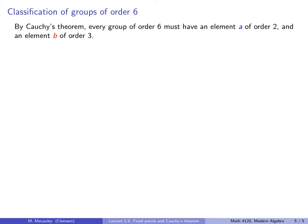Let's finish with an application of what we just learned. Let's classify all the groups of order 6. By Cauchy's theorem, every group of order 6 must have an element, let's call it a, of order 2, and an element, let's call it b, of order 3.